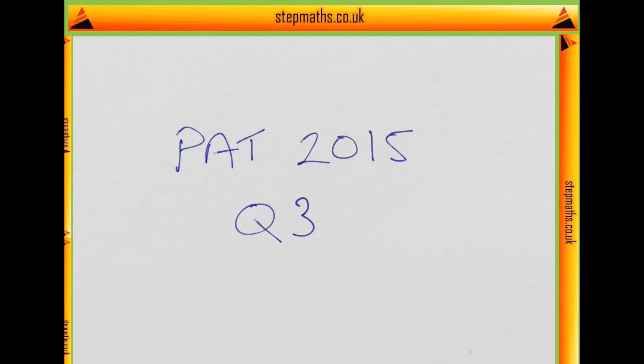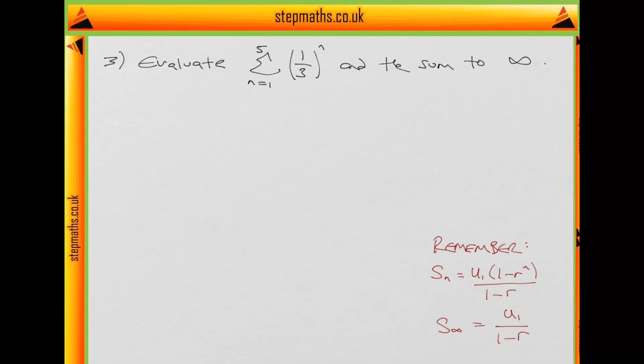Hi. Today we're going to be looking at the 2015 PAT paper and doing question 3. Question 3 asks us to evaluate this sum here from n equals 1 to 5 of 1 third to the power of n, and then to evaluate the same sum, but this time to infinity.